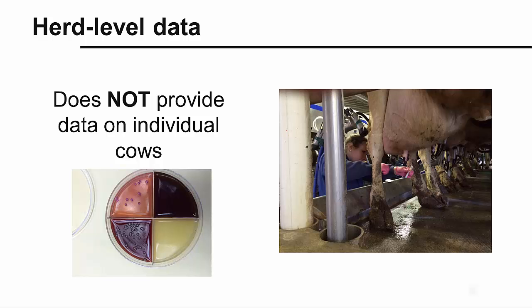A notable limitation of bulk tank milk sampling is that the results from the sample must be applied to the entire herd, or to all of the cows whose milk is commingled in the bulk tank. For this reason, it is not possible to assess the health status of an individual cow based on a bulk tank sample.